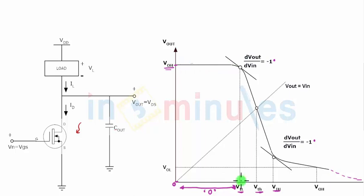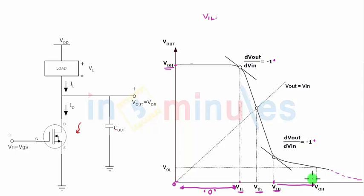So my output is going to stay high. Once it reaches VIL, this is the maximum point until which it will be considered as a logic 0. So we have just defined VIL. VIL is the point where your input just begins to be interpreted as a logic high — from here onward it will be interpreted as a logic high. So VIL in simple words is nothing but the minimum input voltage considered as logic 0.